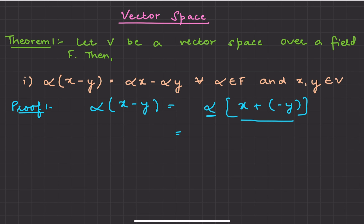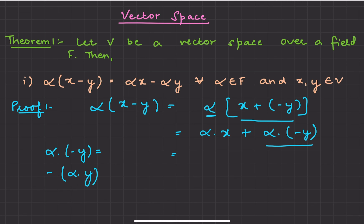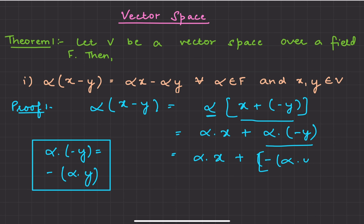If you don't know what I am talking about, this is a property of the vector space and I will link the video in the description. Now, applying distributivity, the answer will be alpha·x plus alpha·(minus y). We have studied that alpha·(minus y) can be written as minus alpha·y — this was also a property studied earlier, linked in the description.